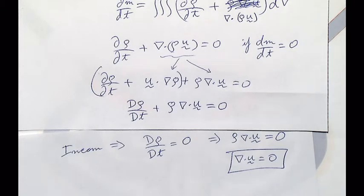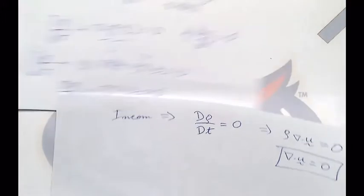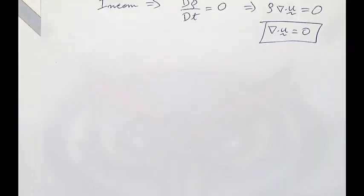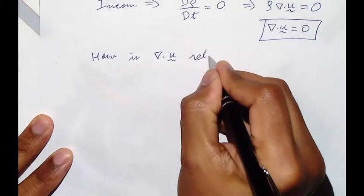This derivation is just for you to know where things come from. The most important result is nabla dot u equals zero in CFD simulations. This is one of the most problematic conditions to satisfy in incompressible simulations — the most time consuming. Incompressible flow means either D rho by Dt equals zero or nabla dot u, the divergence of velocity, equals zero.